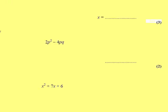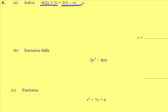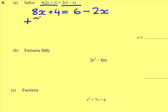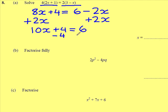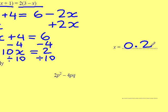Next question. Solve. The first thing I need to do is multiply out each of the brackets, giving me 8x plus 4 equals 6 minus 2x. I've got to look at the algebraic terms and decide which is smallest — minus 2x is smaller than 8x, so I do the opposite and add 2x to both sides, leaving me with 10x plus 4 equals 6. The opposite of plus 4 is minus 4 from both sides, giving me 10x equals 2. Divide both sides by 10 and the answer is x equals 0.2.